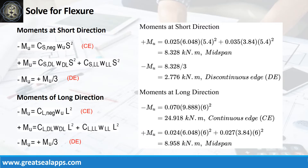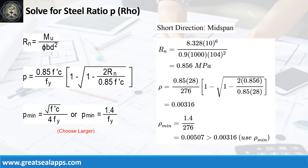Moments at short direction: positive moment at mid-span is 8.328 kN per meter, and negative moment at discontinuous edge is 2.776 kN per meter. Moments at long direction: negative moment at continuous edge is 24.918 kN per meter, and positive moment at mid-span is 8.958 kN per meter. Given short direction, mid-span moment equals 8.328 kN per meter. Resistance factor equals 0.9. B equals 1,000 mm.